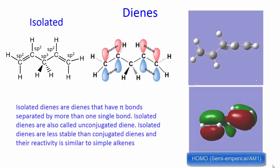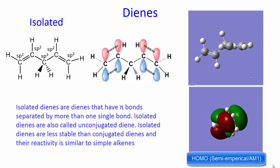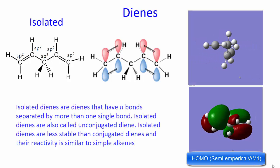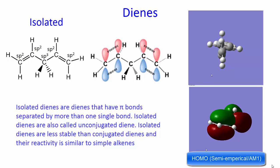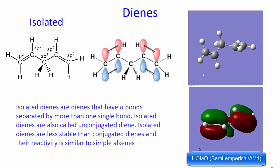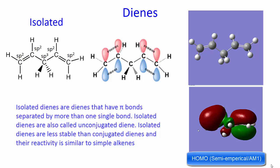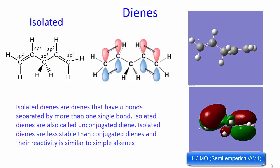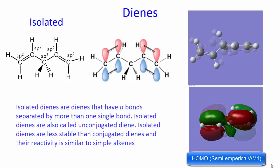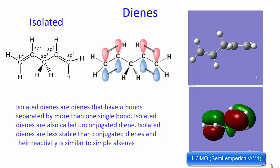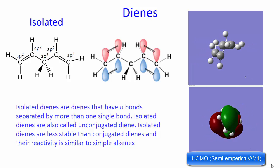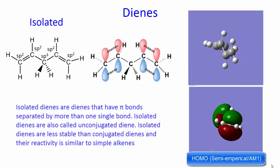Isolated dienes are dienes that have pi bonds separated by more than one single bond. Isolated dienes are also called unconjugated dienes. Isolated dienes are less stable than conjugated dienes, and their reactivity is very similar to simple alkenes.